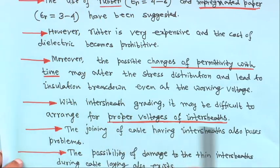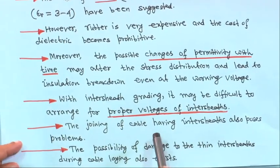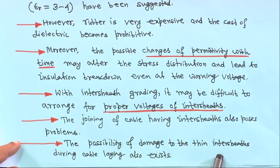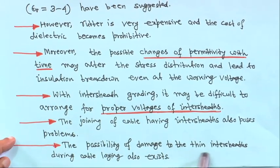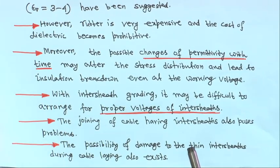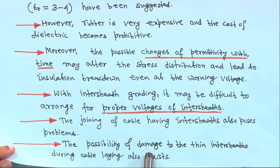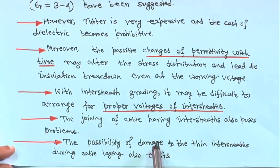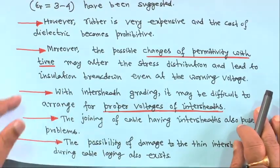The joining of cables having inter-sheets also poses problems. If you cut the cable for jointing, the inter-sheet will be damaged. The possibility of damage to the thin inter-sheet during cable laying also exists. These are the disadvantages of both capacitance grading and inter-sheet grading.